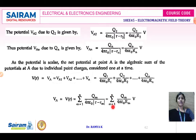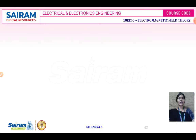The summation index m specifies each point charge — first, second, third, and so on up to n — representing all n point charges in the system.